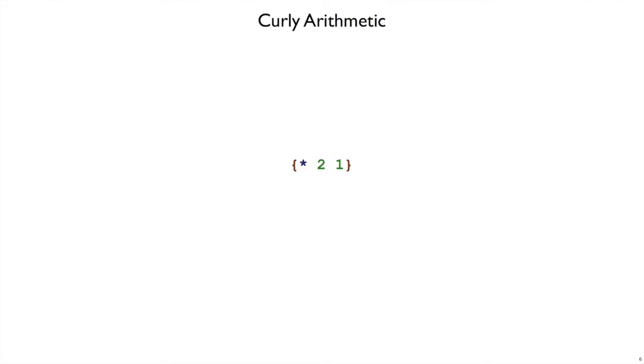Here's another CURLY program. CURLY is going to have addition and multiplication. So that one's going to produce 12. We can nest arithmetic expressions inside of other ones. So we can put a times expression inside of a plus expression. That will be 4 times 3 is 12, plus 2 is 14.